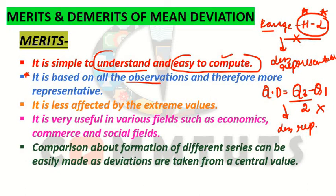Whereas the third method, mean deviation — in the case of mean deviation, all values of your data are considered. Deviations are calculated from each and every observation and included in further calculations. No item is excluded. From all items in the data provided, deviations are taken and further calculations are done on that basis. Because mean deviation is based on all observations, it is a more representative method of measure of dispersion.